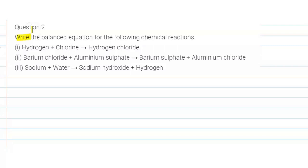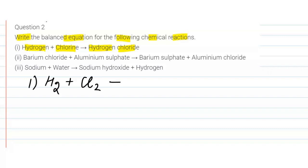The question asks us to write the balanced equations of the following chemical reactions in symbolic form. The first equation is hydrogen plus chlorine, which gives hydrogen chloride. Hydrogen plus chlorine forms hydrogen chloride.